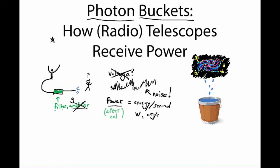What about our filter? That filter is going to have some bandwidth associated with it — it's going to let some range of frequencies through, and we need to deal with that somehow in what we measure. If we look at a calibrator star with a bandwidth of 100 megahertz versus 200 megahertz, how is our signal amplitude going to change?